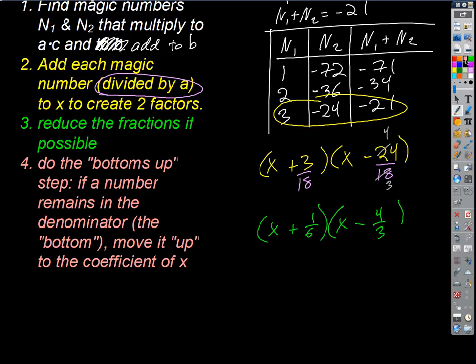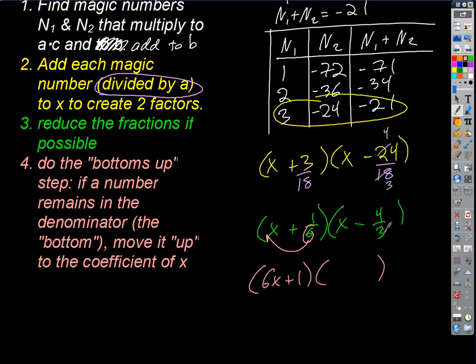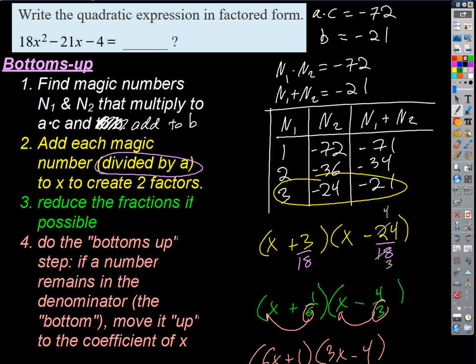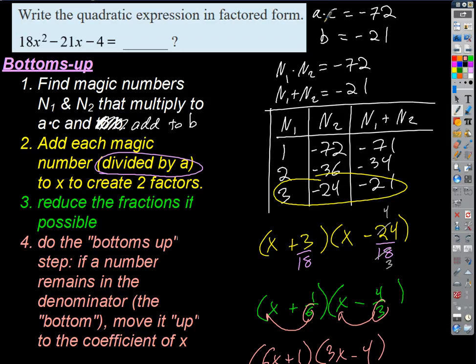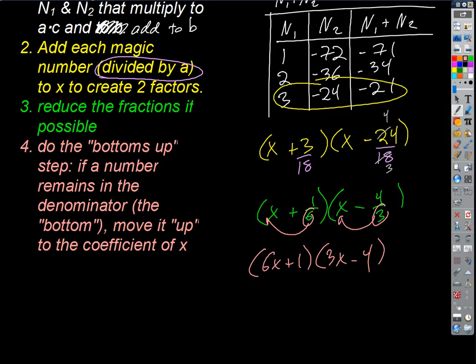Now the last step — Bottoms Up. If there's a number in the denominator after simplifying, it goes up front in front of the x. So (x + 1/6) becomes (6x + 1), and (x − 4/3) becomes (3x − 4). And we're done. That's the factored answer. The numbers got a little bigger with A × C, but after finding magic numbers you just divide by A, reduce fractions, and go bottoms up.